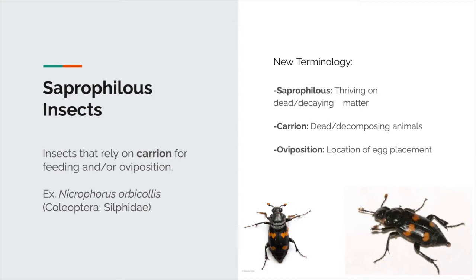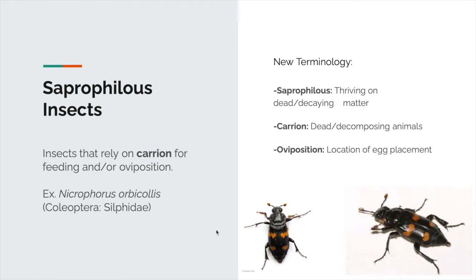A great example of saprophyllic insects is this beetle called Nicrophorus orbicollis, more commonly known as the carrion beetle. These beetles are incredibly interesting in that they exhibit a very rare form of biparental care. Typically in the insect world, we don't see too many examples of biparental care outside of the beetle family. In addition to biparental care, they also have pre-ovipositional and post-ovipositional care mechanisms to ensure the fitness of their offspring.